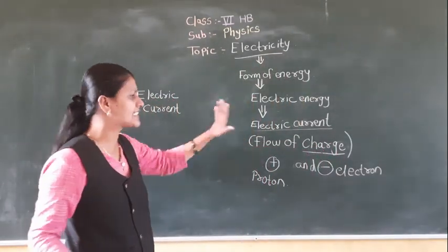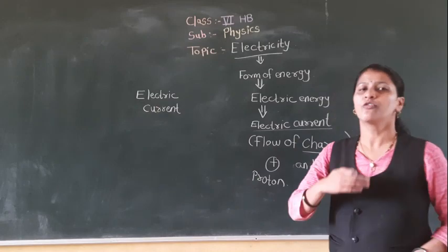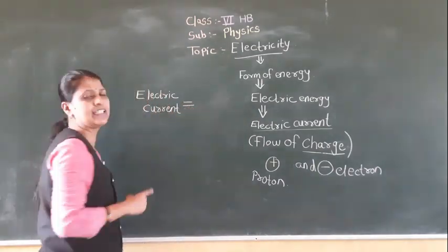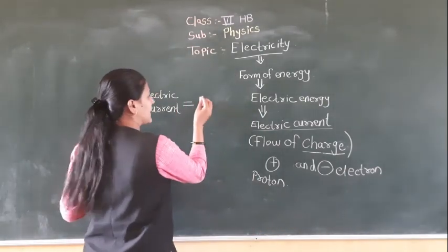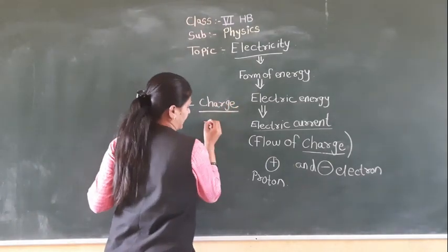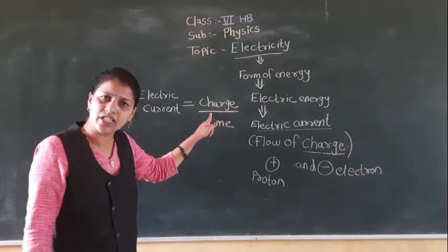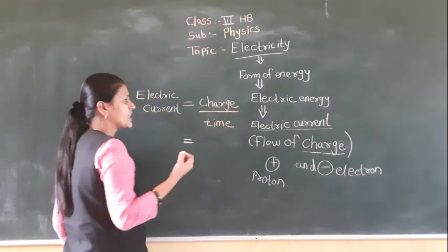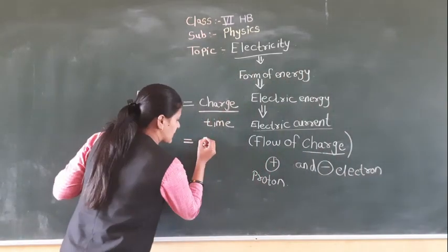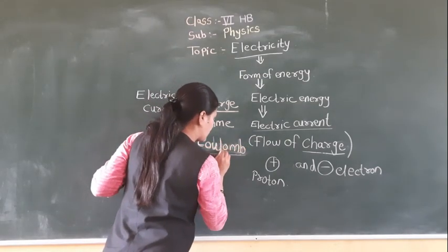So what is exactly the electric current? The amount of charge that flows in a particular time is called electric current. The amount of charge flows per unit time is called electric current. The unit of charge is coulomb.